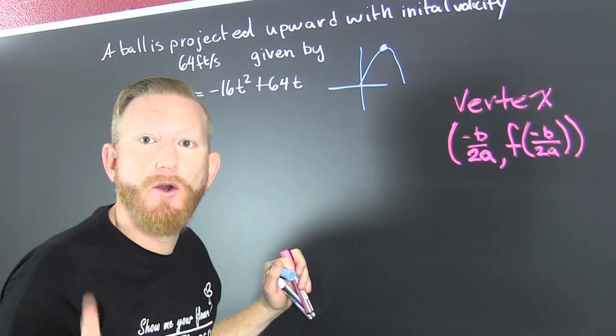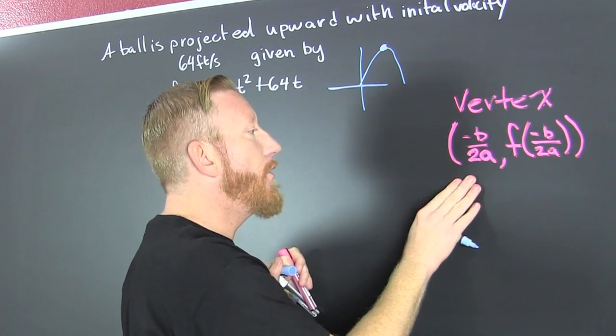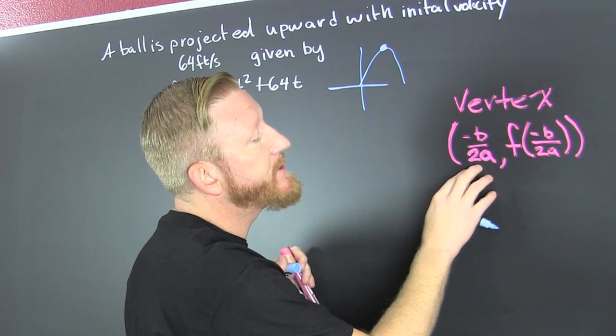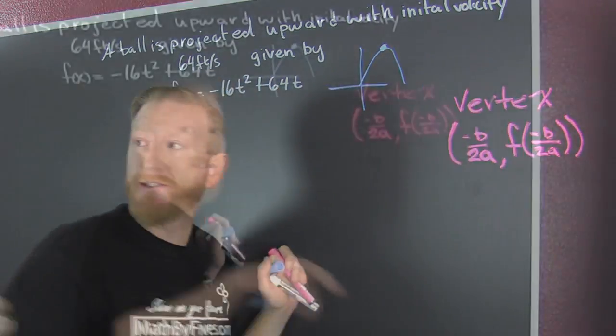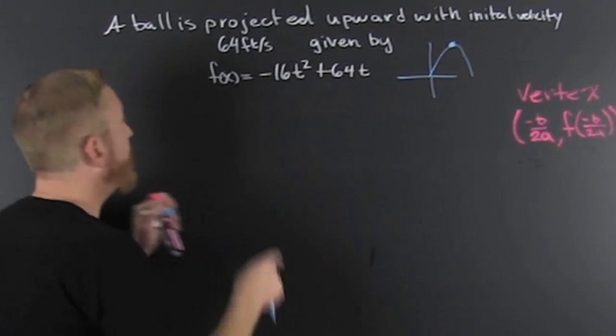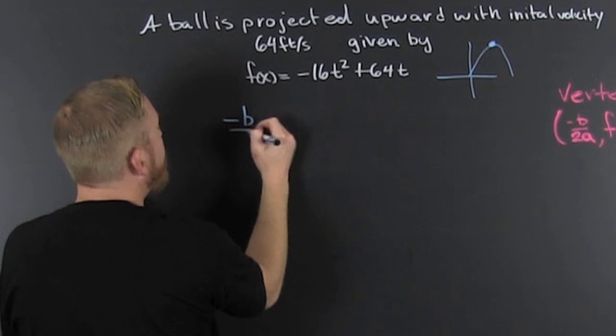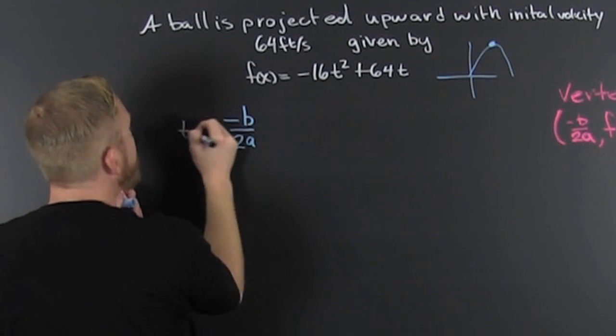That's given to us by the vertex. The vertex formula: minus b over 2a and f of minus b over 2a. So we need to find the time t. We do minus b over 2a - that's going to give us our t value.